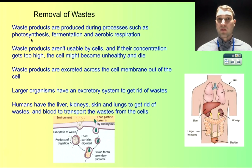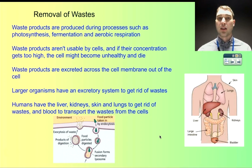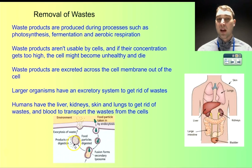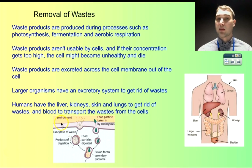We can get waste products from processes like photosynthesis, fermentation, and aerobic respiration. Those waste products can't be used by the cells, especially if they build up in large concentrations — if concentrations get too high, cells might start dying, and therefore the whole multicellular organism might start dying. Waste products are excreted out through the cell membrane in various ways. Here we have a picture showing exocytosis, where waste products get packaged into a vesicle that merges with the cell membrane and spits the waste out into the extracellular environment. In the human body, the extracellular environment includes blood vessels that transport waste away, and you have an excretory system to help get rid of waste products.